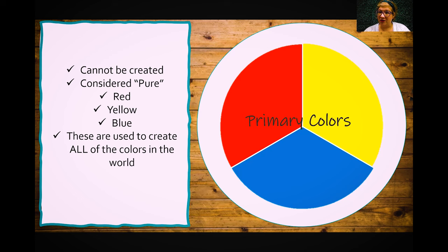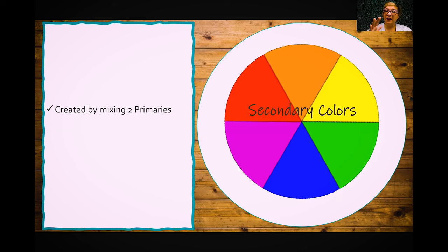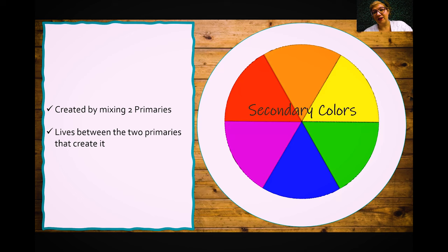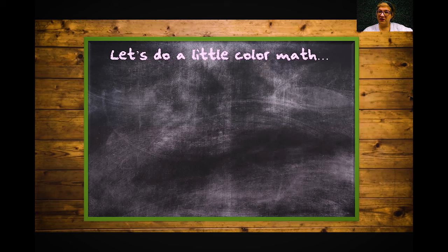Secondary colors are created by mixing two primary colors together. Red and yellow make orange; red and blue make violet; blue and yellow make green. The secondary color lives between the two primaries that create it on the color wheel — so between red and yellow lives orange.